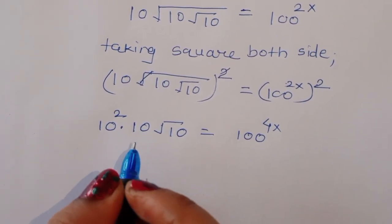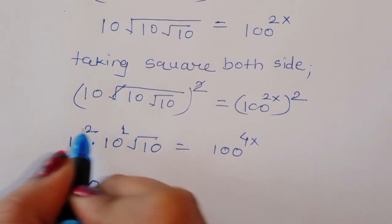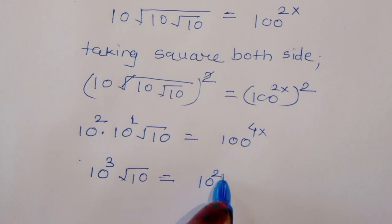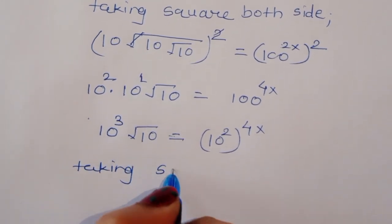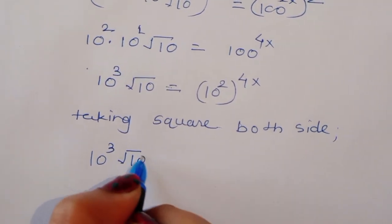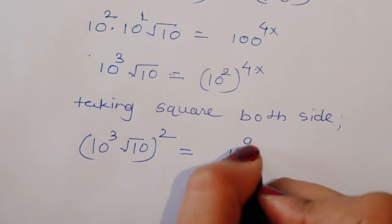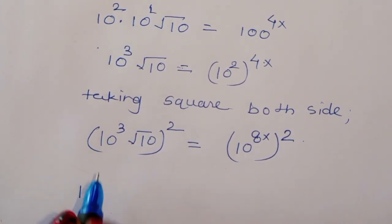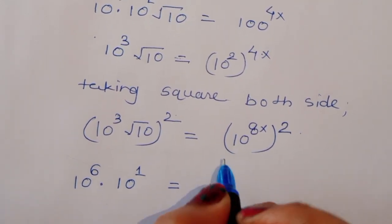Now we can write this. Taking again square, we will get 10 raised to 1 here, 10 raised to 2, and 1 — that is 10 raised to 3. Square root of 10 is equal to 100 raised to 4x. Now taking square both sides, we will get 10 raised to 3, square root of 10, whole square is equal to 100 raised to 8x square.